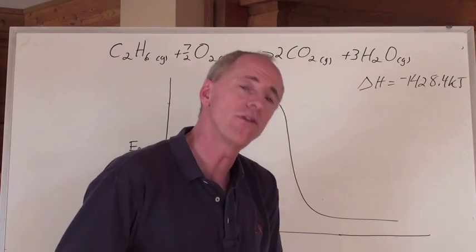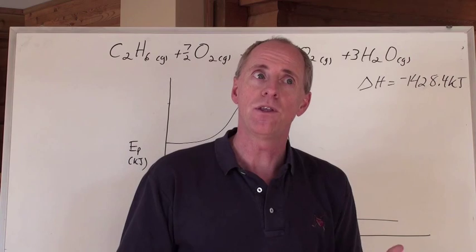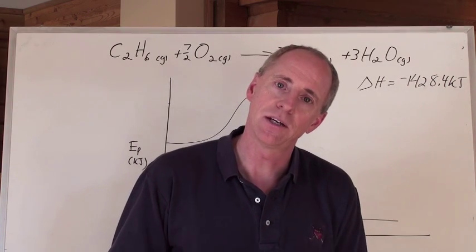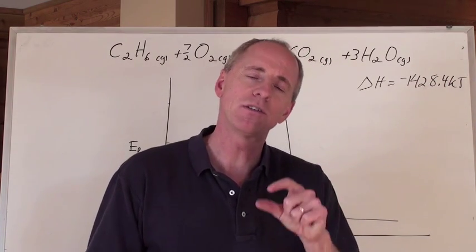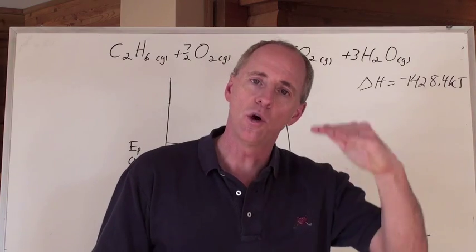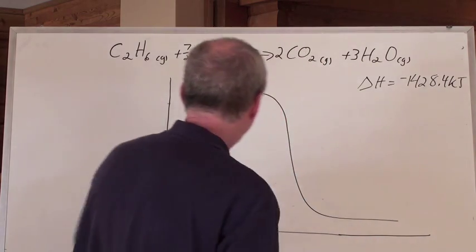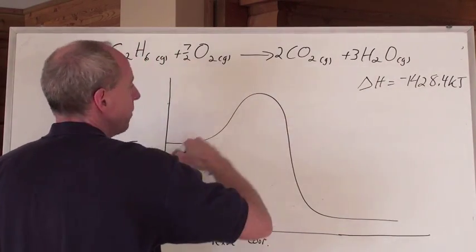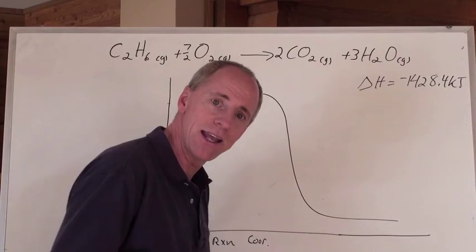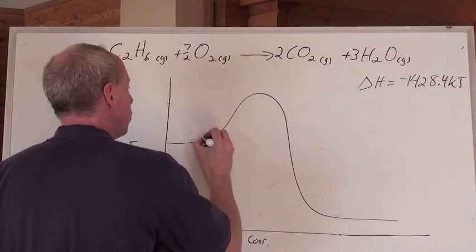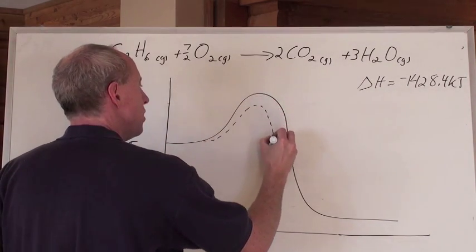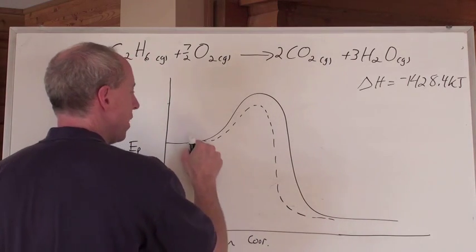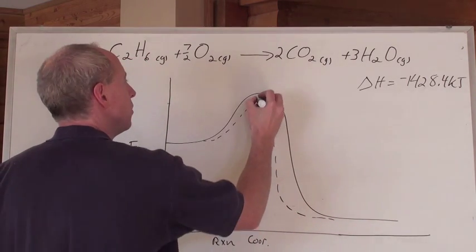And if somebody says, I want that reaction to go faster, well, then you would add something called a catalyst to make it go faster. And by the way, what does a catalyst do? A catalyst lowers the activation energy for a reaction. So if this is the reaction that represents what's happening here, or the path that this reaction has taken, a catalyst will lower the amount of activation energy, but you'll still always get the same delta H. The delta H will never change.